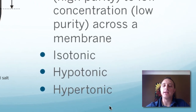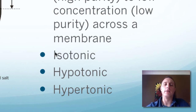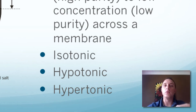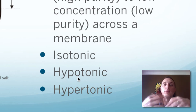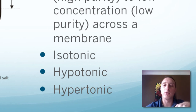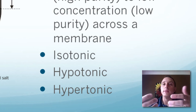Related to osmosis are three important terms: isotonic, hypotonic, and hypertonic. The prefix iso means the same, so isotonic solutions have the same concentration — at equilibrium, solutions tend toward being isotonic. Hypo means less than, so a hypotonic solution has less dissolved solute than another. Hypertonic means the opposite — a hypertonic solution has more dissolved solute. You always need two solutions to compare when using these terms.